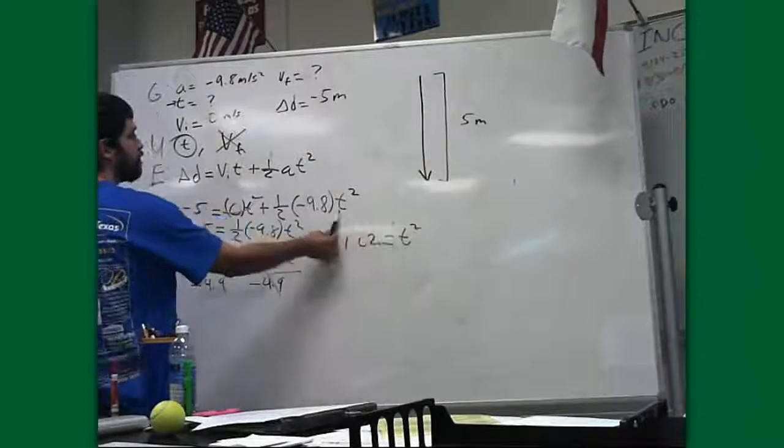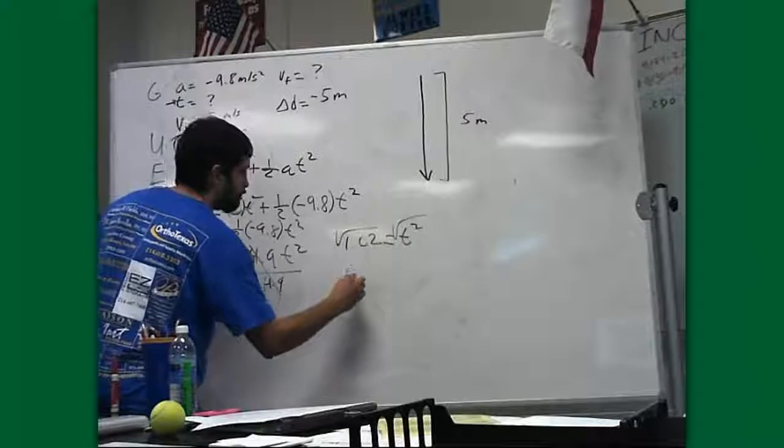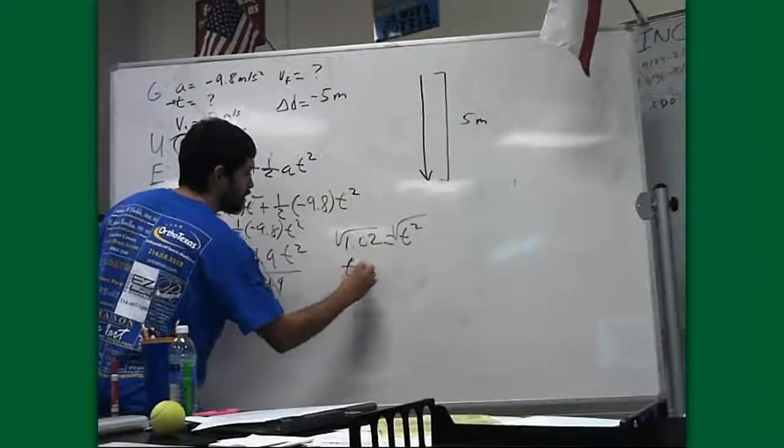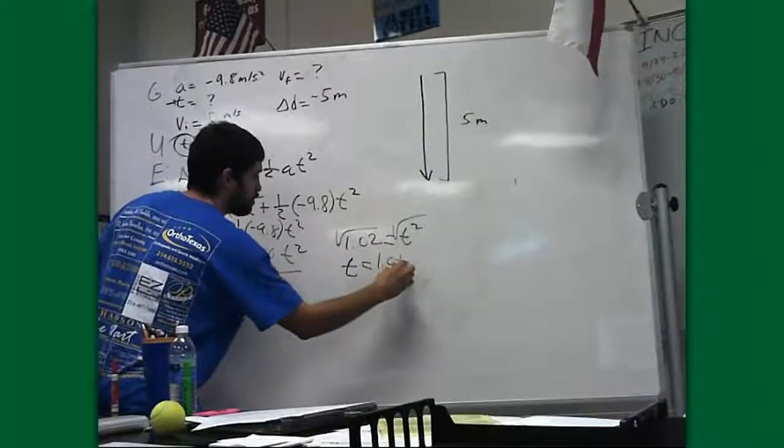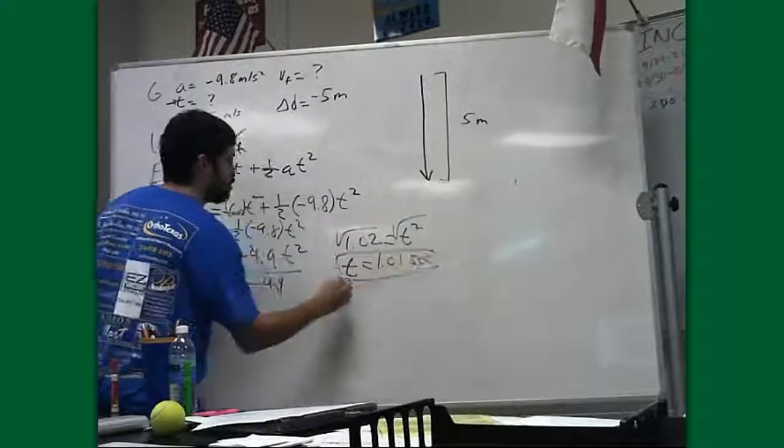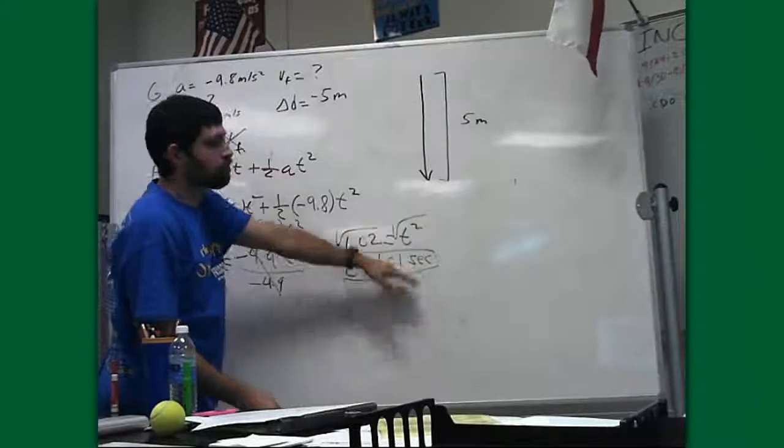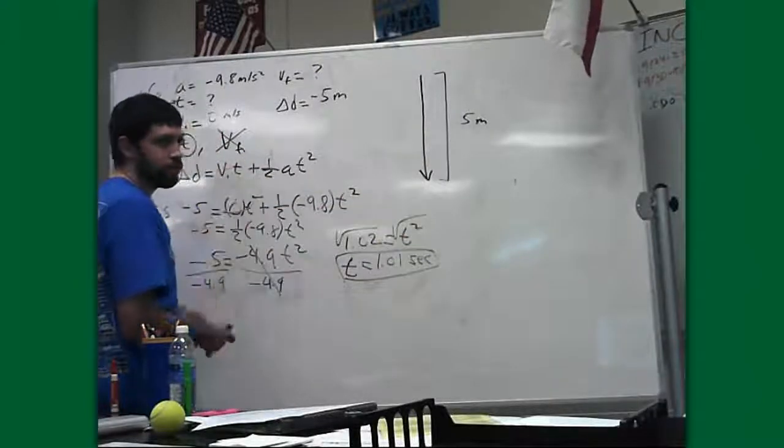The last step when our variable is squared is to take the square root. And our time if we do that is 1.01 seconds. So, if we drop a stone from a height of 5 meters, it's going to take 1.01 seconds to reach the bottom.